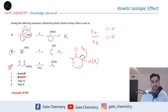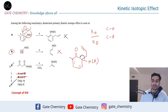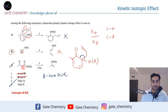That means our correct answer is option C. Since I'm explaining the concept, let's go ahead and solve option C as well. This is nothing but decarboxylation of beta-keto acids. This is a beta-keto acid — at the alpha carbon we have the acid and at the beta carbon we have a ketone group, so it's called a beta-keto acid.